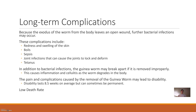Secondary infections include cellulitis, boils, sepsis, joint infections, and tetanus. Also, if the worm is removed improperly and breaks — leaving one half in the body and one half out — the half that remains will cause cellulitis underneath the skin. The pain and other bacterial infections frequently lead to disability. On average that disability lasts eight and a half weeks, but can sometimes be permanent. Overall, it has a low death rate but the complications are pretty major.